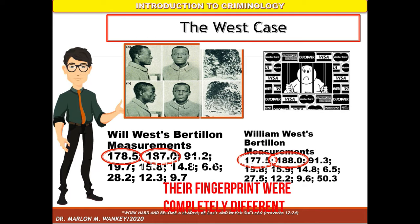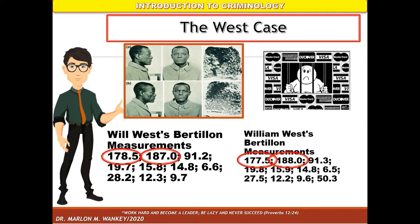It was disclosed in the fingerprint analysis that Will West has an inner whorl of 11 ridges, while William West has an inner loop with 18 ridges.